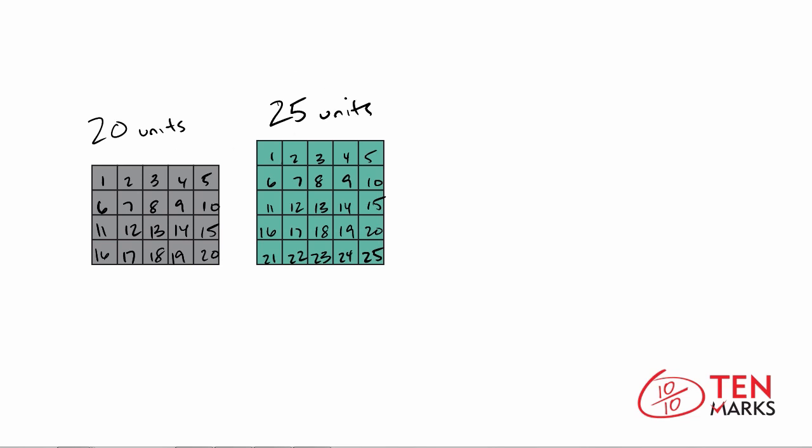This means the shape on the right has the greater area. This shape takes up more space. It has greater area. In this lesson, you've learned how to find the area of a rectangle by counting unit squares. Happy solving!